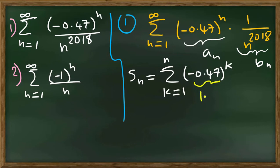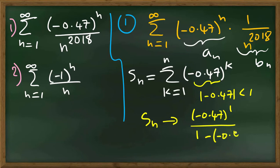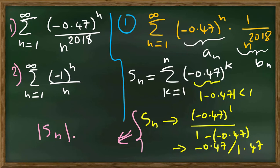Because the absolute value of minus 0.47 is less than 1, we know that this geometric sum converges as n goes to infinity. And it converges to minus 0.47 to the power 1 over 1 minus minus 0.47.